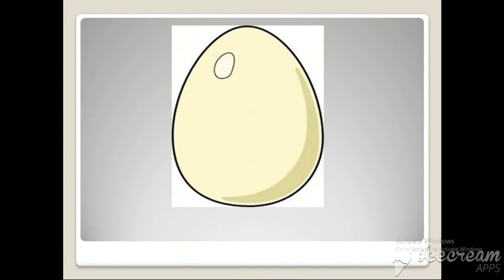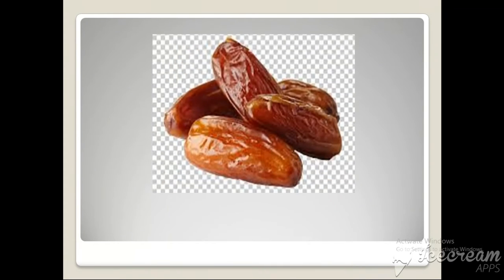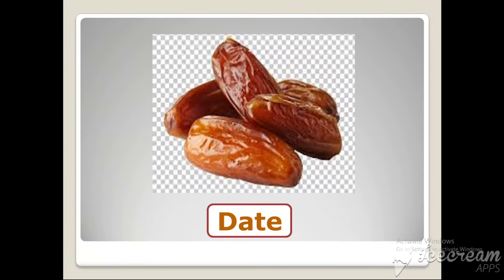And what is this? Egg. What's the color of this egg? White egg. And what is this? Date. What's the color of this date? Brown. Very good.